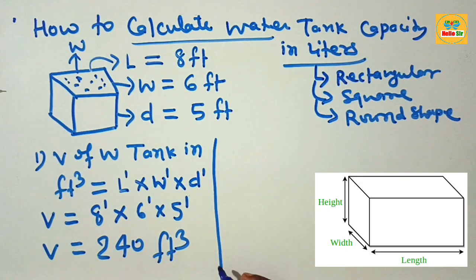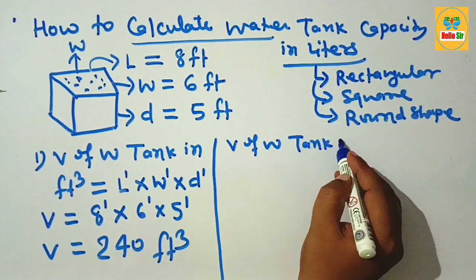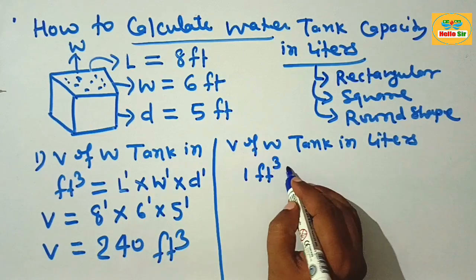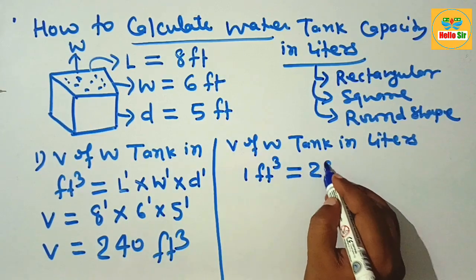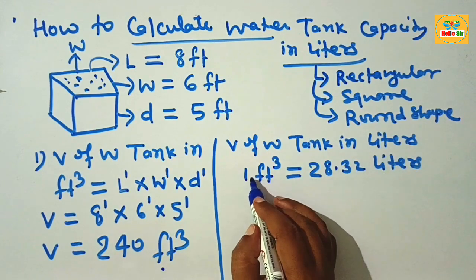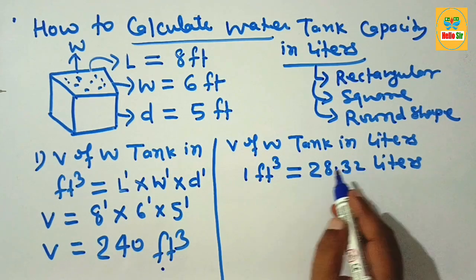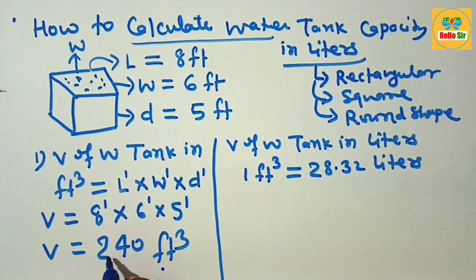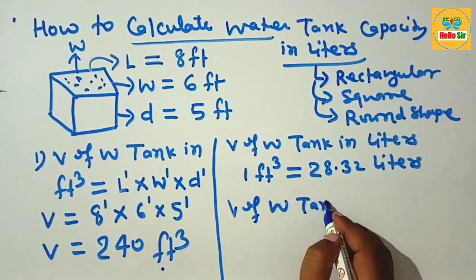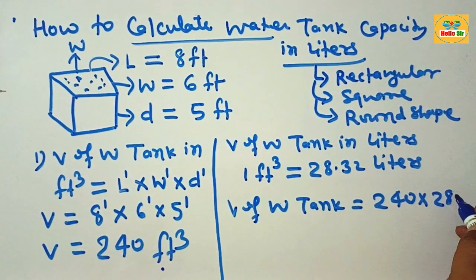This is the volume of the water tank in cubic feet. Now we find the volume of the water tank in liters. Remember: 1 cubic foot is equal to 28.32 liters. This is the formula to convert cubic feet into liters. To get the total volume in liters, multiply 240 by 28.32 liters.